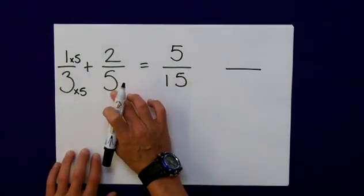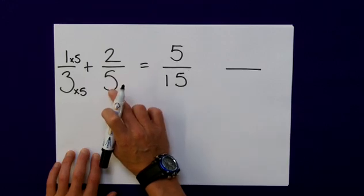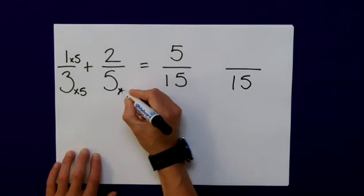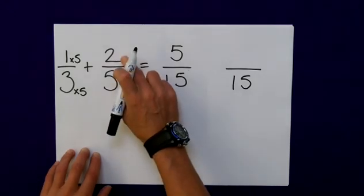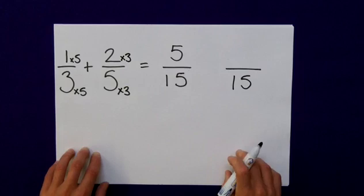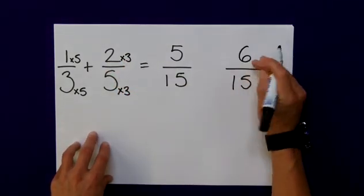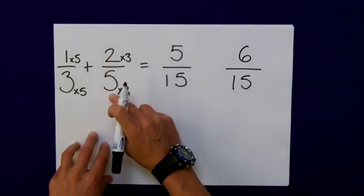I must do the same to the 2 fifths. What have I done to the 5 to get 15? Well, I actually multiplied it by 3. I must do the same to the numerator, times that by 3, to give me my equivalent fraction. 2 times 3 is 6. 6 fifteenths is the equivalent fraction to 2 fifths.